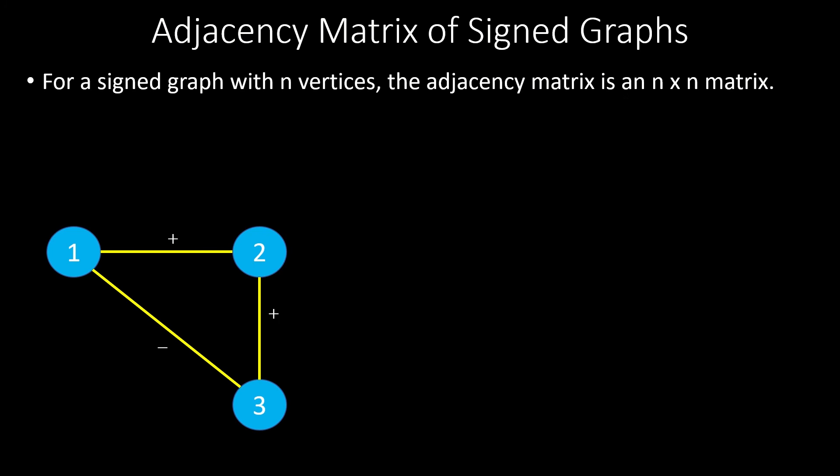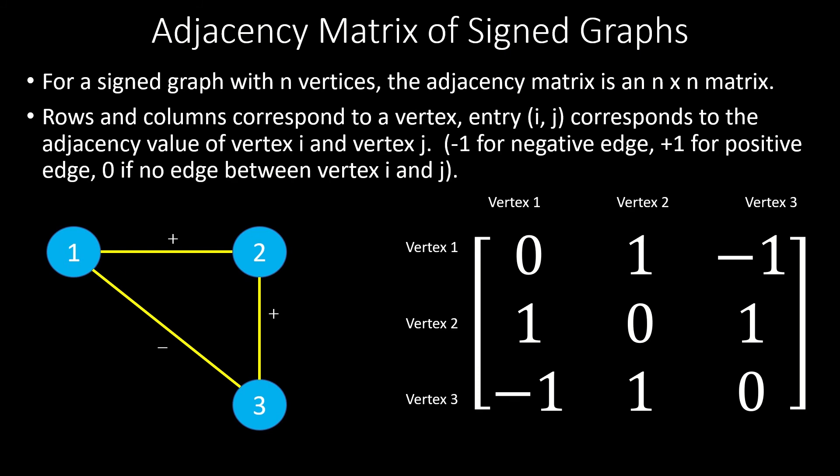The adjacency matrix of a signed graph is similar to the adjacency matrix of your typical graph. If our signed graph has n vertices numbered from 1 to n, then our adjacency matrix is an n-by-n matrix where a given row or column corresponds to a vertex, and the entry in the matrix is 1 if vertex i is adjacent to vertex j through a positive edge, or negative 1 if vertex i is adjacent to vertex j through a negative edge. The entry ij is 0 when the vertices i and j are not adjacent.